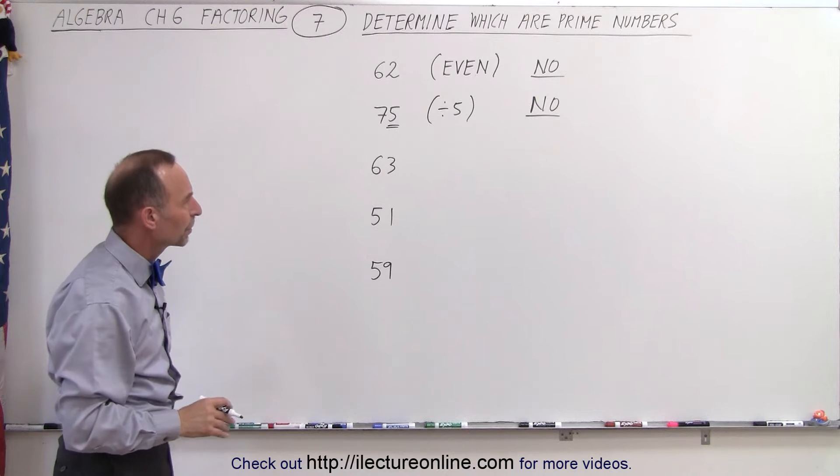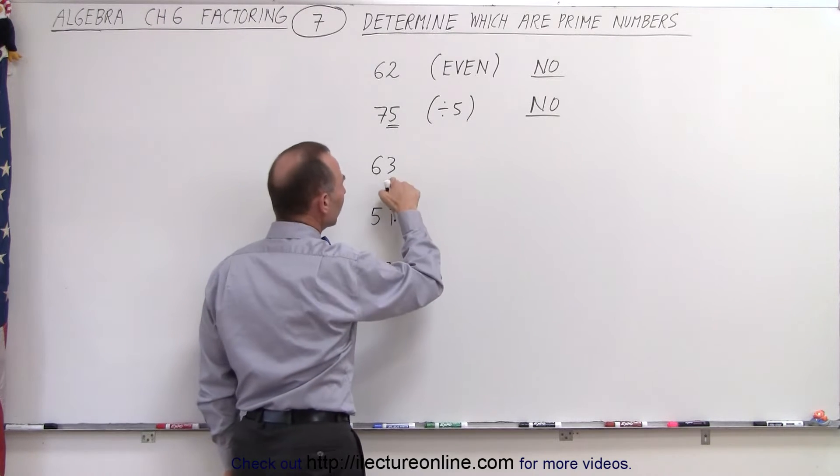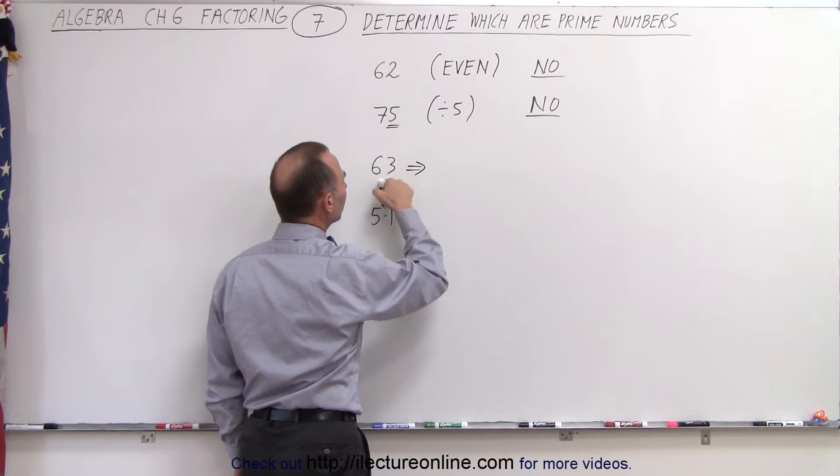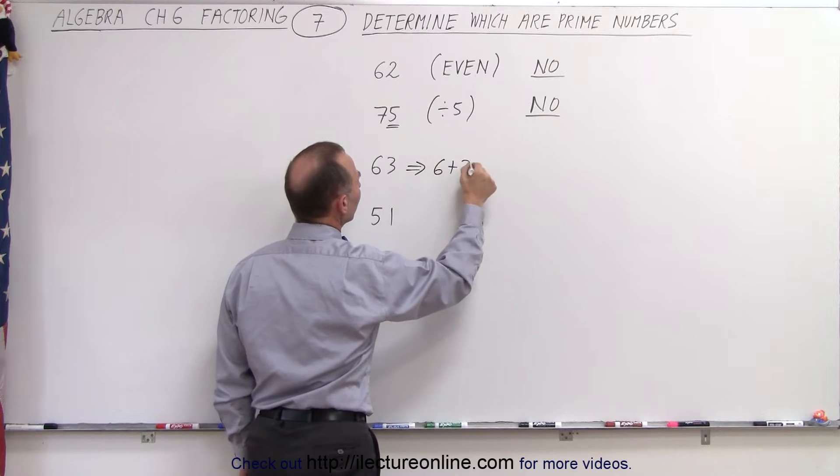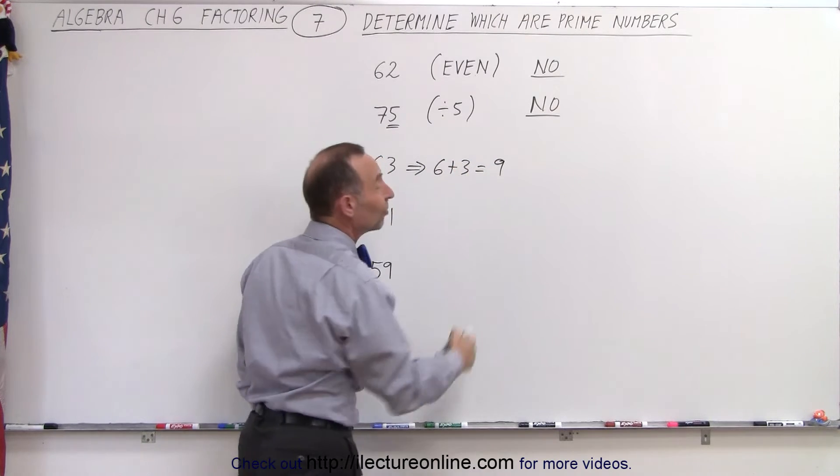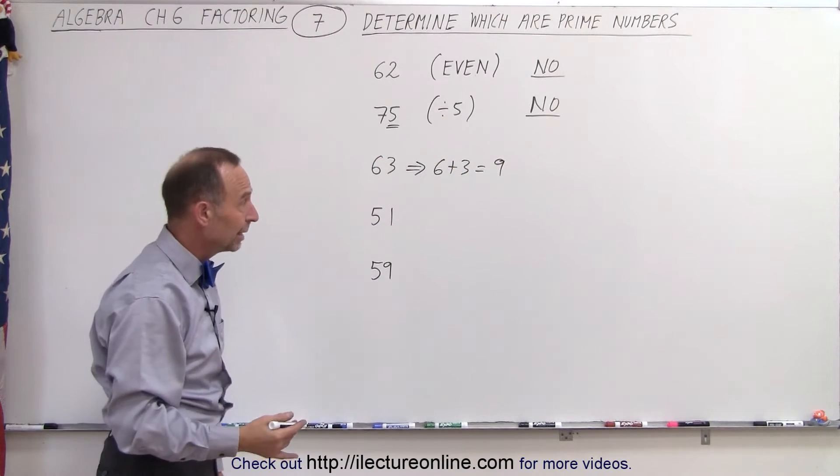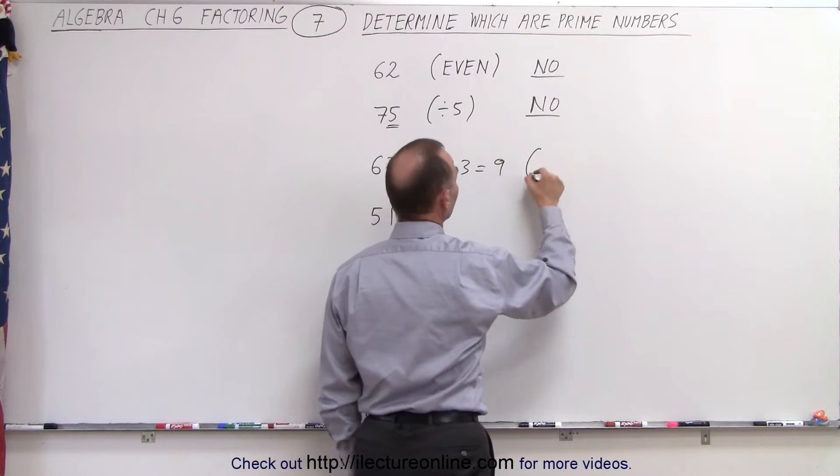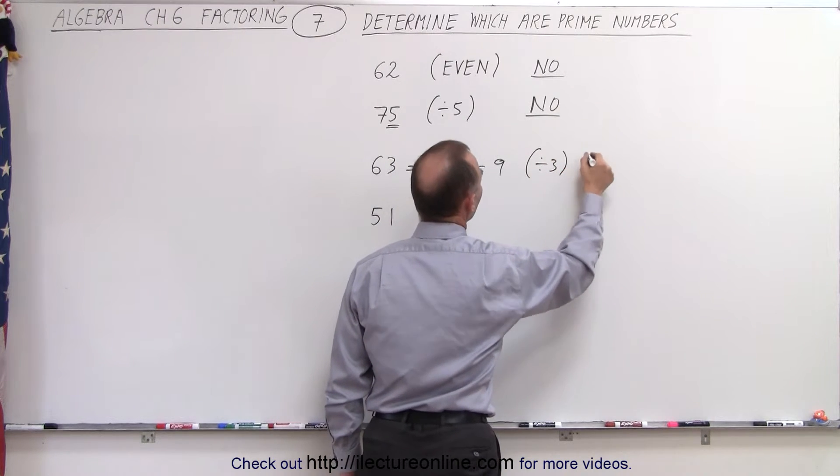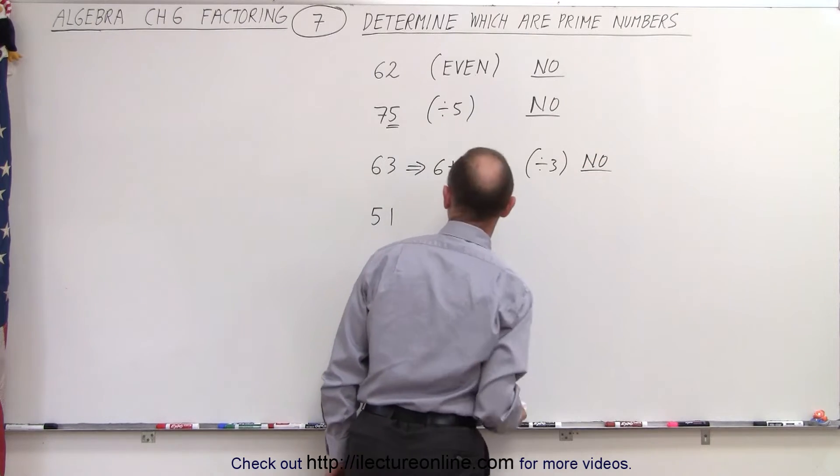What about 63? Well, notice it is odd, but if I take the two digits, 6 and 3 and add them together, I get 9, and since 9 is divisible by 3, then of course it's not a prime number. So here we can say that it's divisible by 3, and therefore no, it's not a prime number.